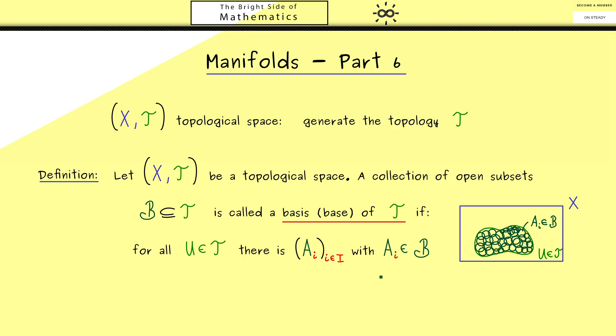The only important thing here is that all the A_i's come from our collection B, and then the conclusion is that the union of the sets A_i is the set U. So in summary, each set U can be written as such a union, and this is the defining property of a basis of a topology.